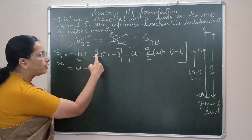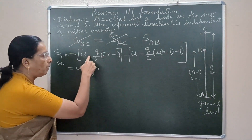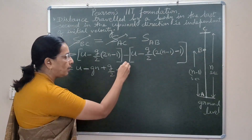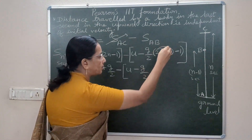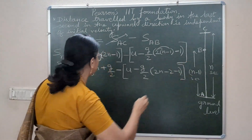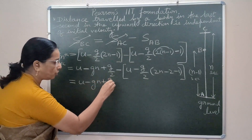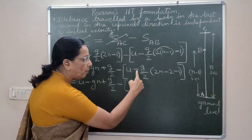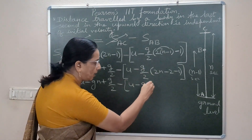So the expression becomes: minus g by 2 times 2n — the 2 cancels — giving minus g·n. Then minus of the second term: minus u minus g by 2 times (2n minus 2 minus 1). Distributing gives 2n minus 3. We get minus g·n.